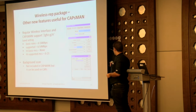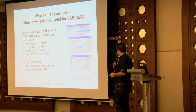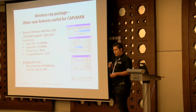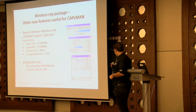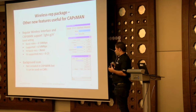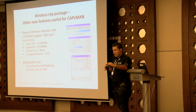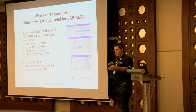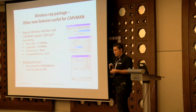A new feature that is not a CAPsMAN feature but is very useful: on every access point while it's transmitting, we can run a background scan. This is a feature of the wireless rep package. Without stopping transmission, we can scan other access points to see what frequencies they are using and find a better frequency for less interference and better network performance.